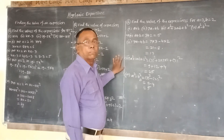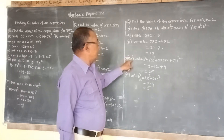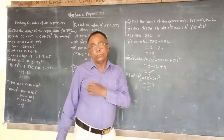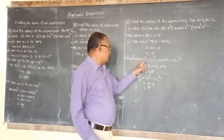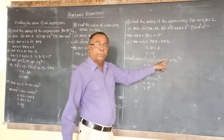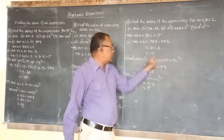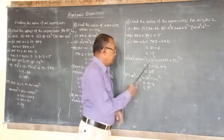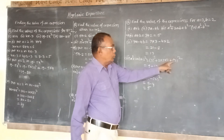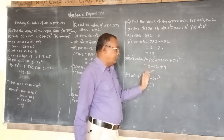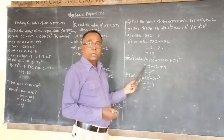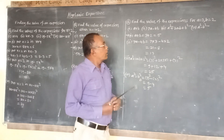Now put a equal to 3 and b equal to 2 in 7a minus 4b. So it becomes 7 into 3 minus 4 into 2, which is 21 minus 8, equaling 13. So the value of the second expression is 13. For the third expression a squared plus 2ab plus b squared, putting a equal to 3 and b equal to 2, we get 3 squared plus 2 into 3 into 2 plus 2 squared.